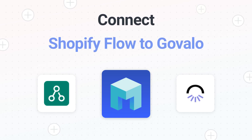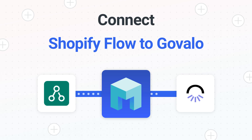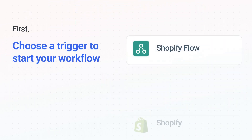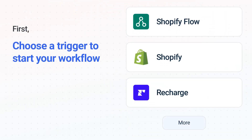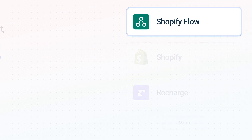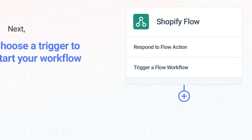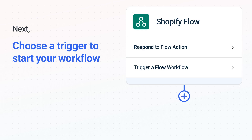Connecting Shopify Flow to Govalo has never been easier because you can do it with Mesa, which helps everyone using Shopify create automated workflows. It's easy to get started: first, choose your trigger app — Shopify Flow — then choose the trigger event from the list. This is what kicks off your workflow. When you authenticate connected apps, your data will be available across every step.